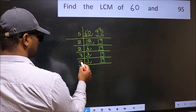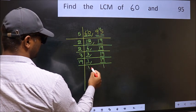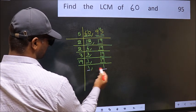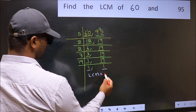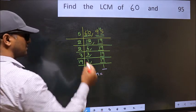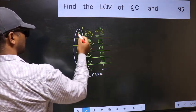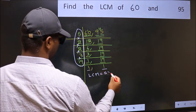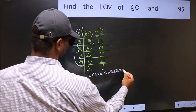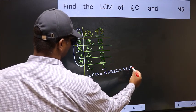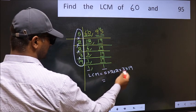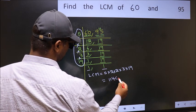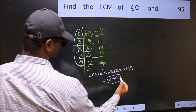19 is a prime number, so 19 once 19. We now get 1 in both places. So our LCM is the product of all the divisors: 5 times 2 times 2 times 3 times 19. When we multiply these numbers we get 1140, which is our LCM.